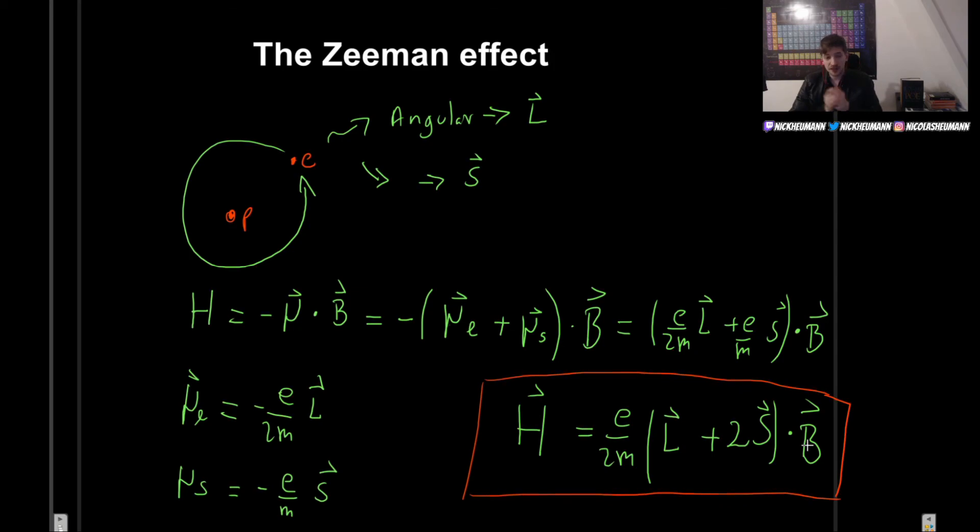But if the field is very strong, then we cannot do that. Then we would have to consider that our perturbation is what we have done before. And there is also an intermediate case where we cannot actually take any of them to be bigger or smaller than the other. And that's going to be a bit more complicated. So we will take a deep dive into each one of those cases.